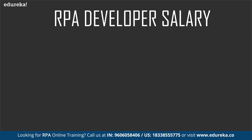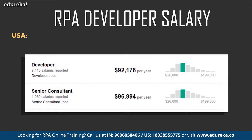Looking at the stats for the United States, according to indeed.com again, estimated from around 18,000 employees and past and present job advertisements in the past 36 months, the average salary of an RPA developer ranges from around $92,000 per year for a developer to $96,000 per year for a senior consultant. That's a huge amount of money, so RPA is a great career choice for those looking to shift from testing backgrounds or non-IT backgrounds into automating front office and back office processes.